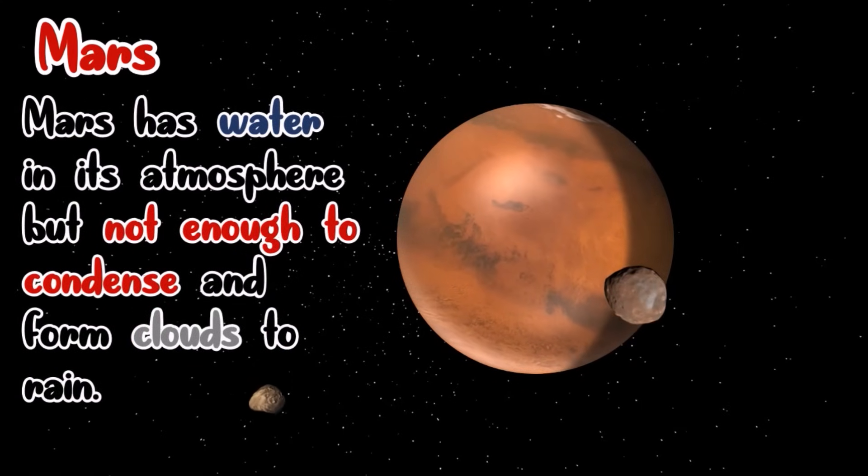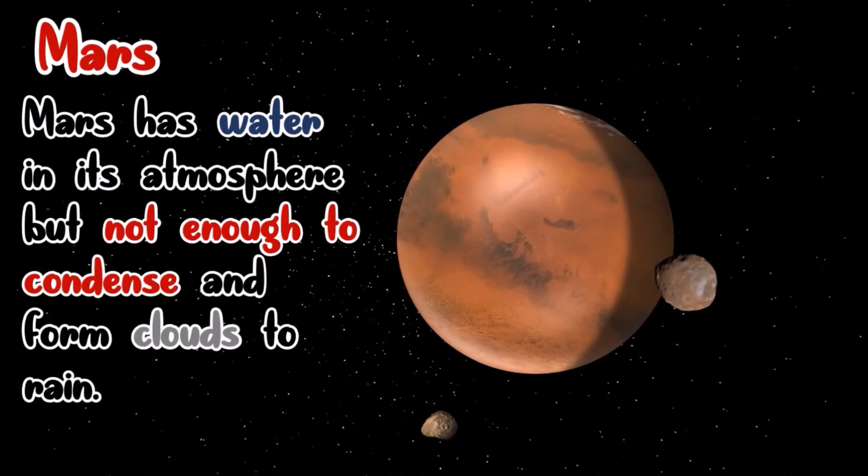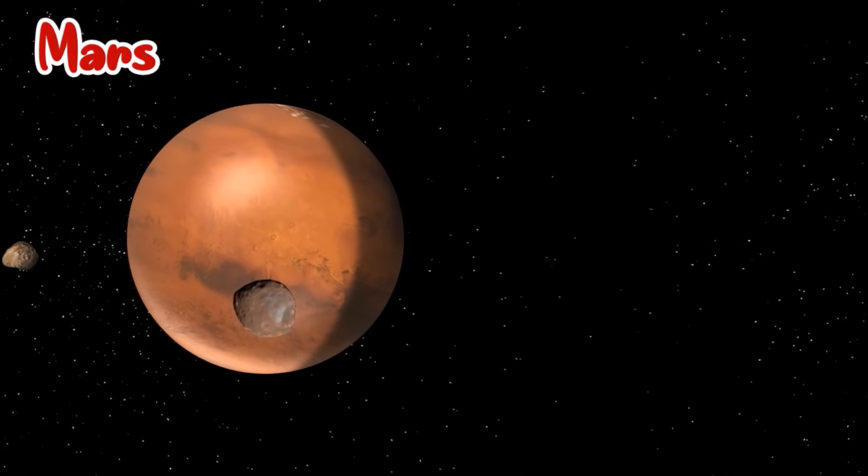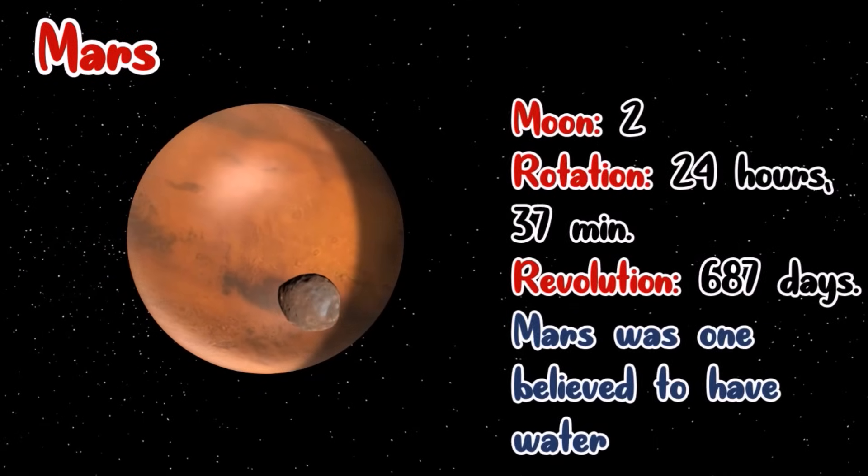Mars has water in its atmosphere, but not enough to condense and form clouds. The Earth's rotation requires 24 hours and 37 minutes, while it requires 687 days to complete one revolution. Mars was once believed to have water.